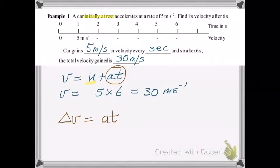So even if the car wasn't at rest, you could calculate the change in velocity equals 30 m per second, and then just add that on to whatever the initial velocity happened to be.